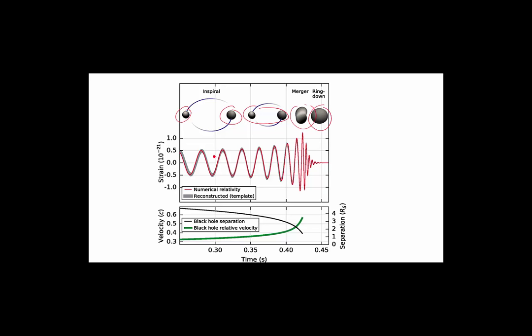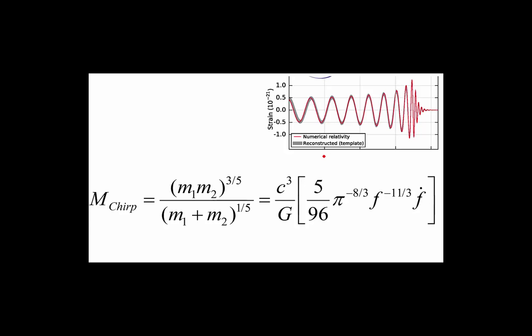So what you expect is a frequency that's increasing, intensity that increases, peaks at about the time when they collide and then tails away. And that's exactly what you see. What can we deduce from this? Well the simplest deduction comes from the early stages. When you're in the late stages you need a full supercomputer numerical relativity simulation. But in the early stages there's an approximation, the chirp mass.